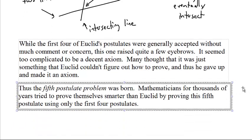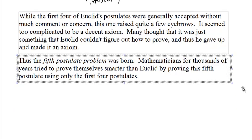Thus, the fifth postulate problem was born. Mathematicians for thousands of years tried to prove themselves smarter than Euclid by proving this postulate. And because they want to prove this postulate without having to assume it, they're proving it using only those first four postulates: connecting points, extending lines, drawing circles, and being able to measure angles.